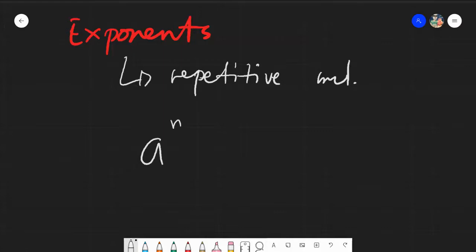And n cannot be a negative number. So let's make it clear that the exponent cannot be a negative number. So n is the exponent and a would be the base.